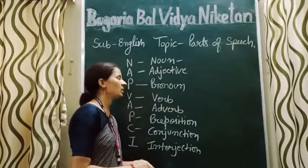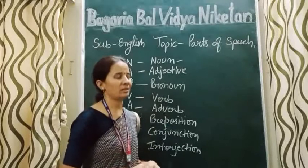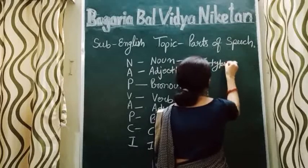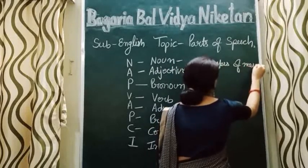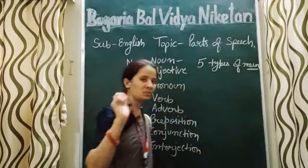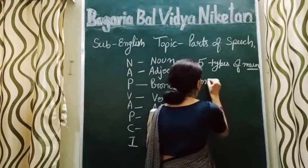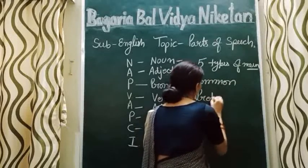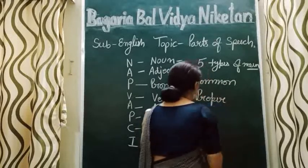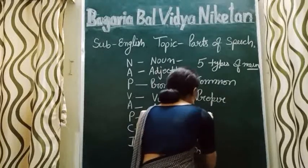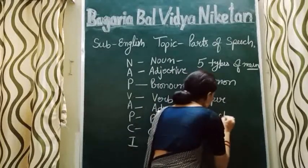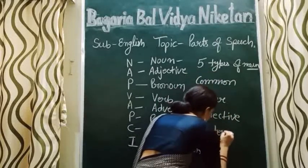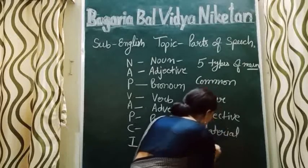Now students, I want to tell you how many types of noun are there. There are five types of noun: first, common noun; then proper noun; then collective noun; then material noun; then abstract noun.